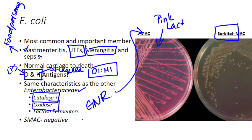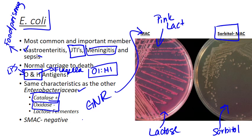E. coli is not able to ferment sorbitol. Just like MacConkey agar is infused with lactose, there is a MacConkey agar variant infused with sorbitol instead — they use the same pH indicator to see if the organism can ferment it, turning pink or red if positive. Most pathogenic E. coli strains are unable to ferment sorbitol, so they are sorbitol MacConkey negative, or SMAC negative. The E. coli strains we're going to talk about today are generally SMAC negative.